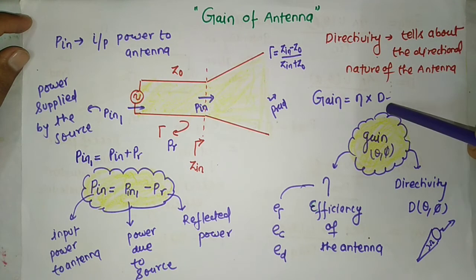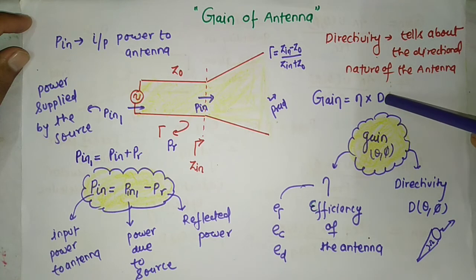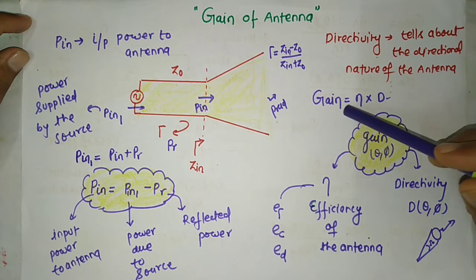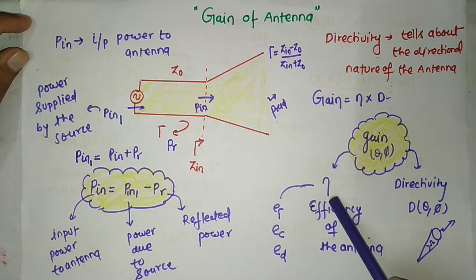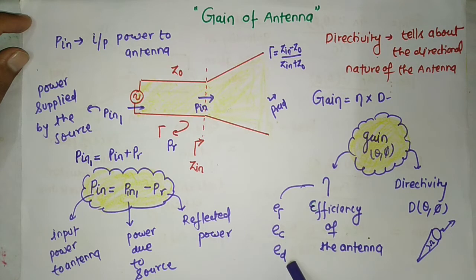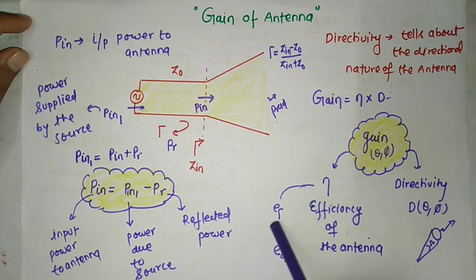Gain mathematically is the multiplication of efficiency and directivity. Gain accounts for two things: one is efficiency and another is directivity. Efficiency includes reflection coefficient efficiency, conductor efficiency, and dielectric efficiency. Conductor and dielectric efficiency together are called E_cd, and E_cd is also called radiation efficiency.